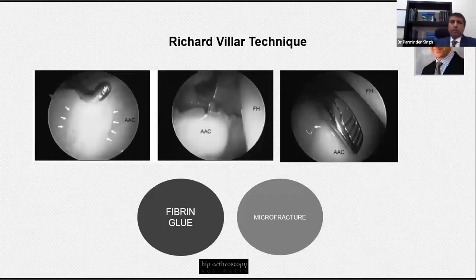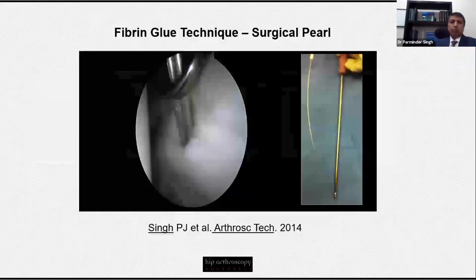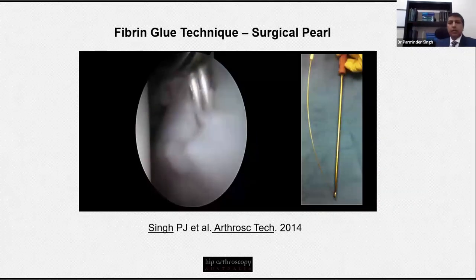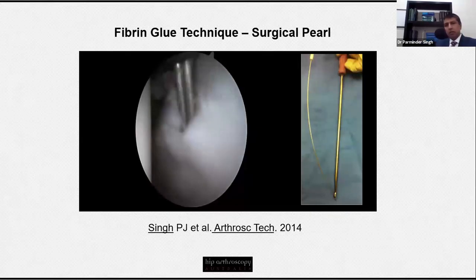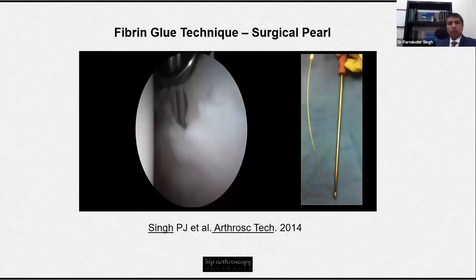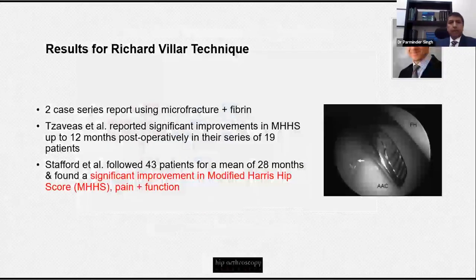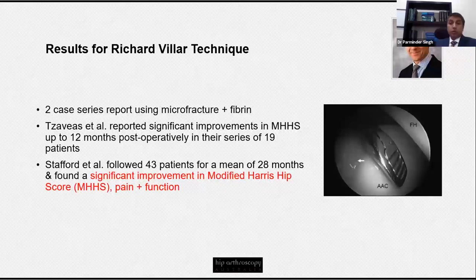Richard Villa's technique is widely quoted in the literature. Villa was the first to describe the use of fibrin glue in articular cartilage. He takes down the chondrolabral junction, microfractures behind the articular wave sign, then uses fibrin glue without any suture repair. A tip for using fibrin glue: the needles can be quite flexible, so using a rigid curette to hold the needle tip allows very accurate placement. Villa reported two case series — one at 12-month follow-up and another at 28 months — both showing significant improvement in modified Harris Hip Score, particularly in pain and function.